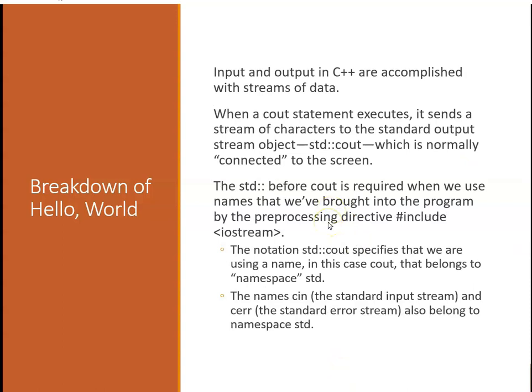Input and output in C++ are accomplished with what are called streams of data. Think of those as a buffer that gets pushed out onto the screen. When a cout statement executes, it sends a stream of characters to the standard output. That standard output is called cout. We put std colon colon in front of it because that is a namespace. What that means is across programs, we could have multiple things named cout that are different things. Using a namespace identifies a function and identifies it associated with the include that brings it in. Std cout specifies that we are using the name cout that belongs to the standard namespace. The names cin (the standard input) and cerr also belong to namespace standard. Cerr is the error stream when things go bad.